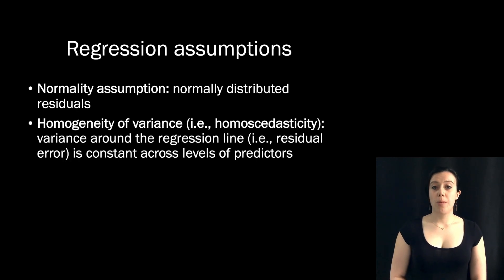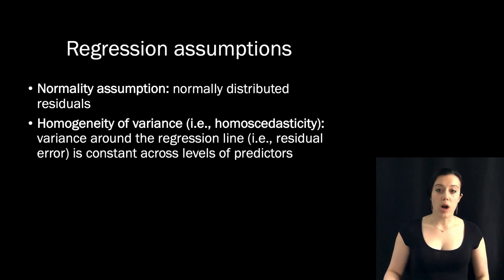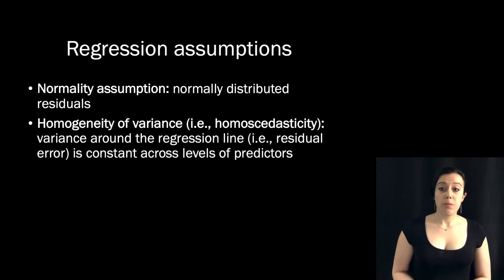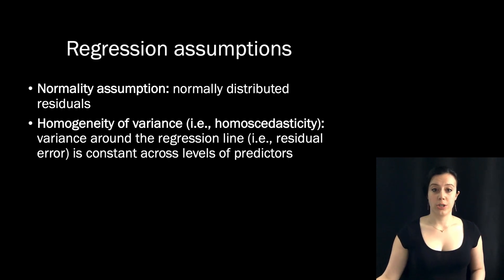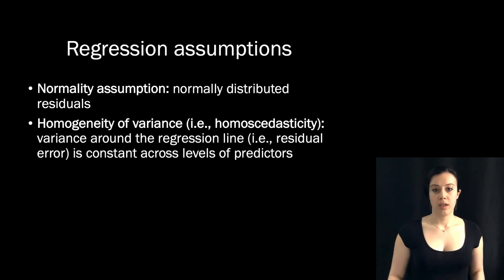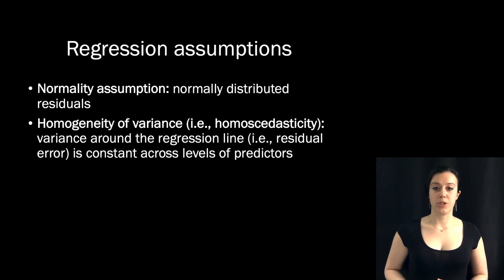Regression also assumes homoscedasticity. That means that the residual variance should be the same across levels of the predictor. It shouldn't be the case that when x is small your residuals are small, but when x is large the residuals are large. So if you plot the residuals against the x values, you shouldn't see this fanning-out pattern. The error should be constant across levels of x — that's our homogeneity of variance assumption.